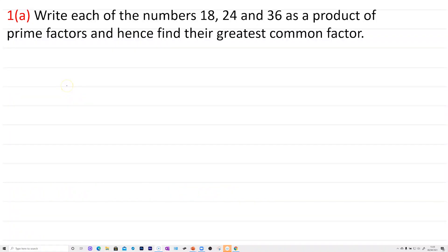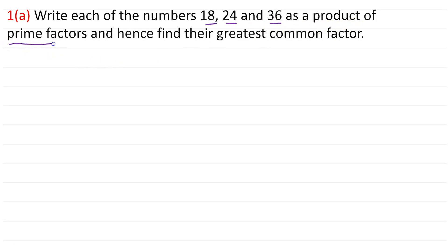Hi guys, this is Question 1 from NECTAR Form 2 Math Paper 2020. For 1a, we're asked to write each of the numbers 18, 24, and 36 as a product of prime factors, and hence find the greatest common factor — also called the highest common factor — of all three numbers. To write them as products of prime factors, I like to use prime factor trees.